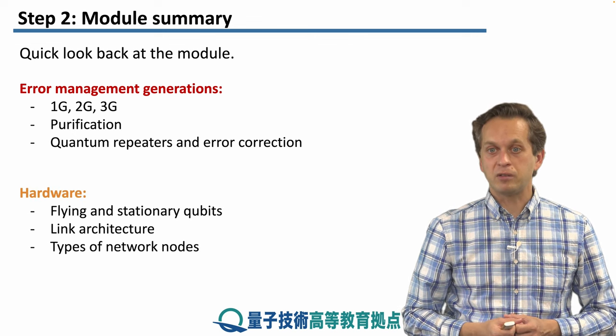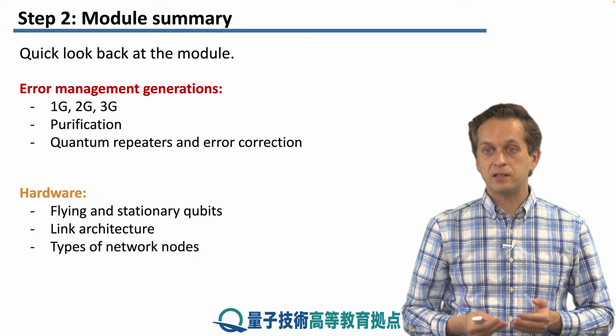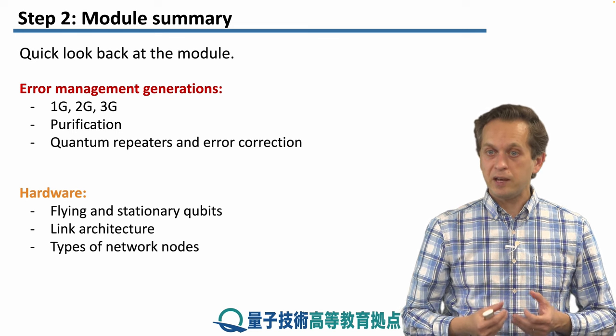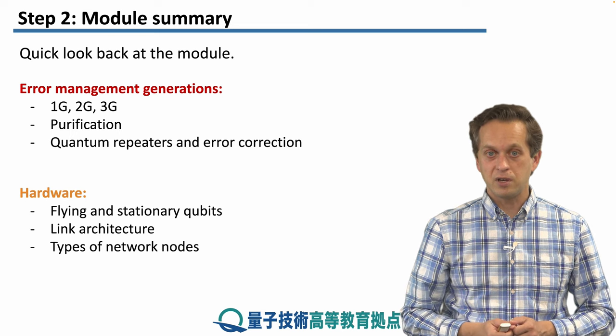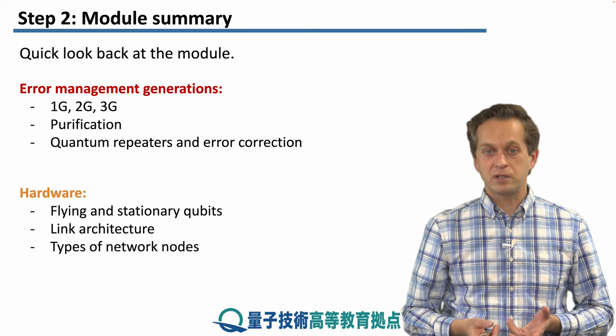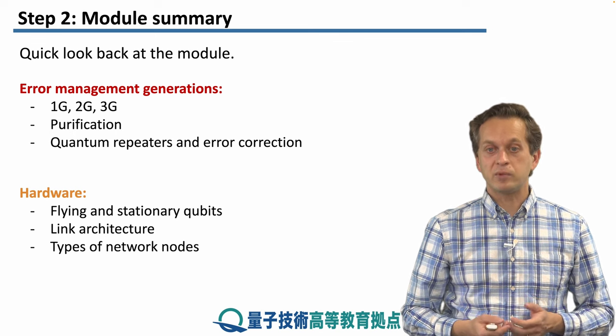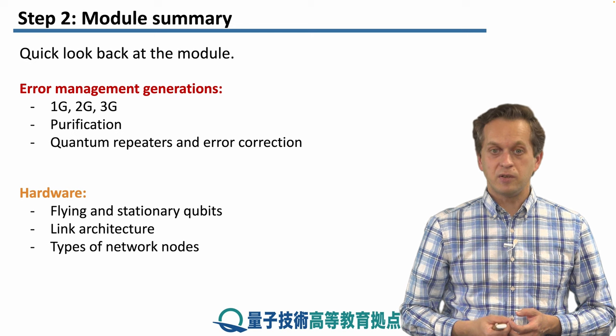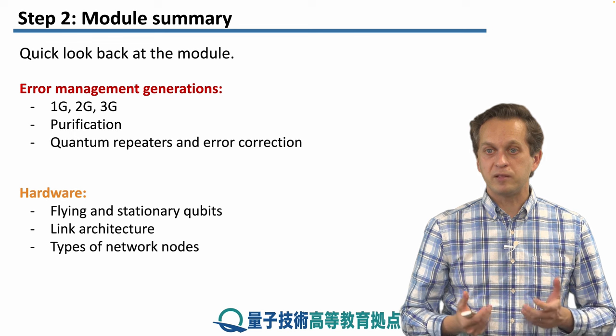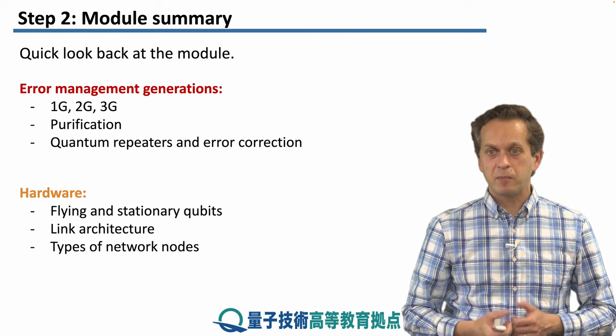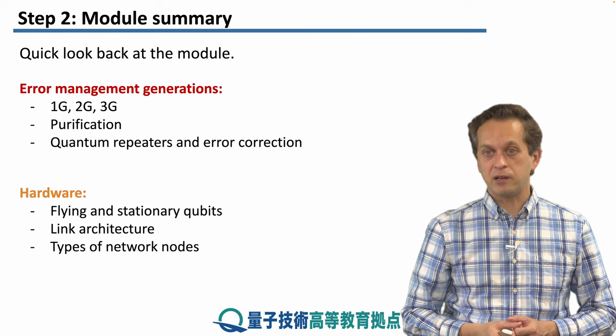We then moved on to lectures about quantum hardware that's used in quantum networking. And we started by talking about flying and stationary qubits. Flying qubits were used for communication. They were the single photons traveling between network nodes. While stationary qubits were the quantum memories used to store information and hold them for a long time. We then talked about link architecture. We saw that setting up entangled links between neighboring nodes is the fundamental first stepping stone in quantum networks. But there's many different ways of how we can go about it.